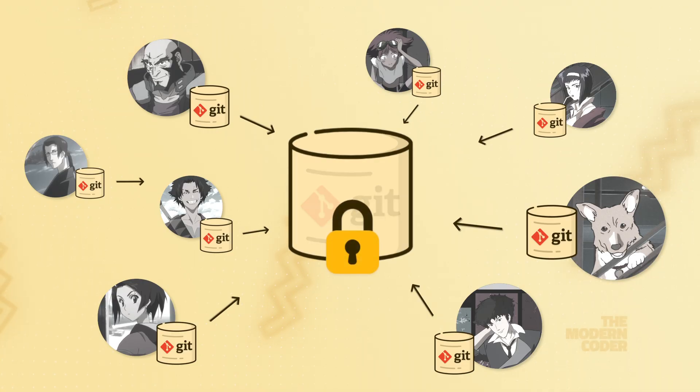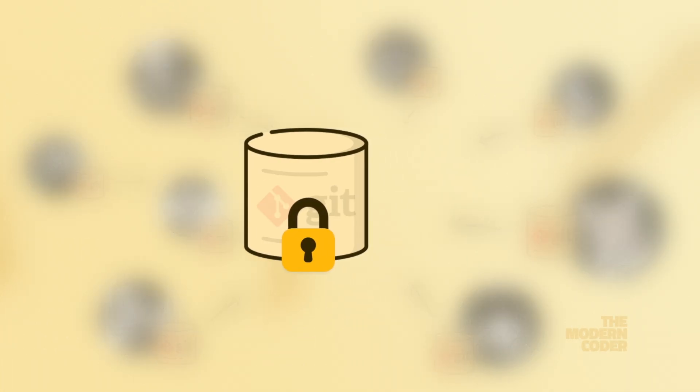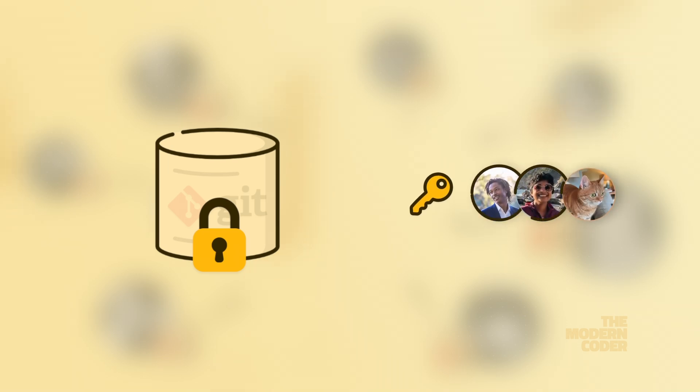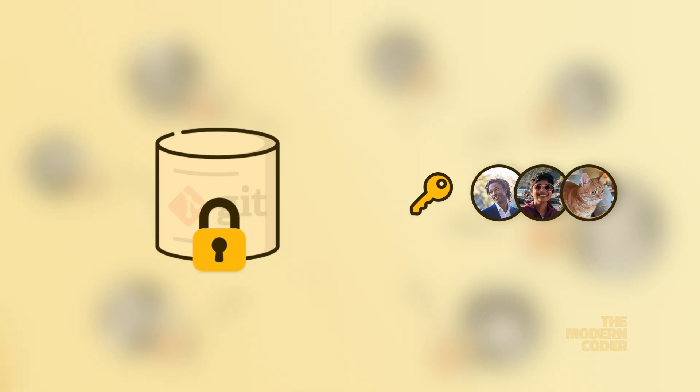A solution is to write-protect the source repository so that only a select group of maintainers have write access to that repository. Branch and repository-level permissions are not features provided by Git, so as long as these open source repositories are hosted on a platform that provides these permissions, the repository can be secured. But now that the repository is write-protected, how can somebody outside the admin group contribute?